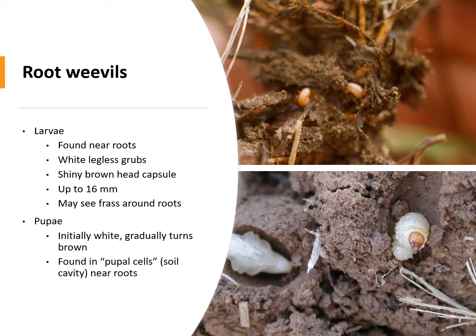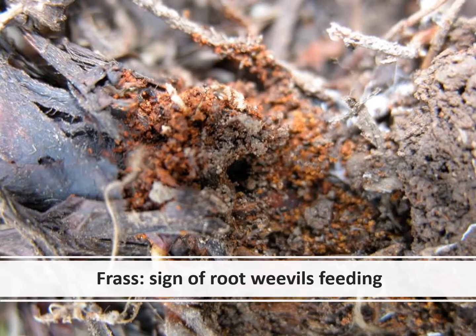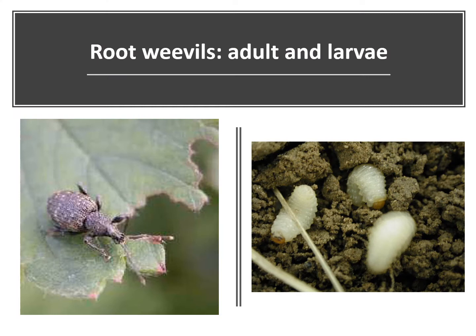Weevil larvae or grubs feed on the roots. The larvae are cream colored, legless, and C-shaped with brown heads. They are found in the soil embedded in the crown or around the plant. Pupae are initially white and gradually turn brown, found in pupal cells. Eggs are laid at the base of the plant, hatch, and larvae enter the soil. The larvae overwinter in the soil then feed on plant roots in the spring, feeding on smaller roots before moving to larger roots or the base of the crown as they mature. The frass shown is indicative of root weevil feeding.